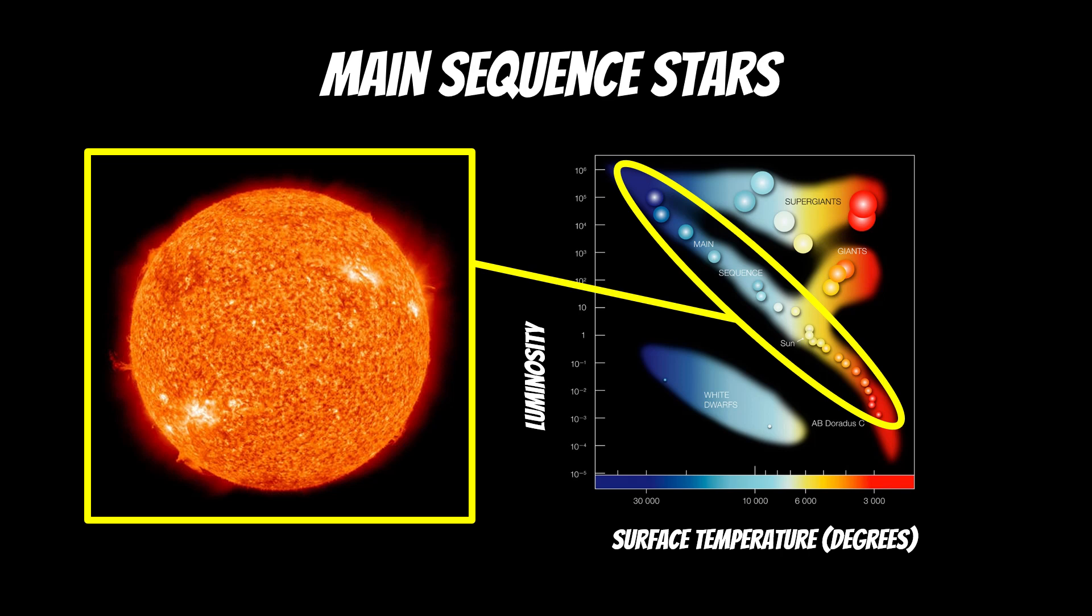So you can see on the left-hand side at the bottom you've got the hottest stars, and then it goes across to the coolest ones. And as you go up on the y-axis, the luminosity—they get more luminous.